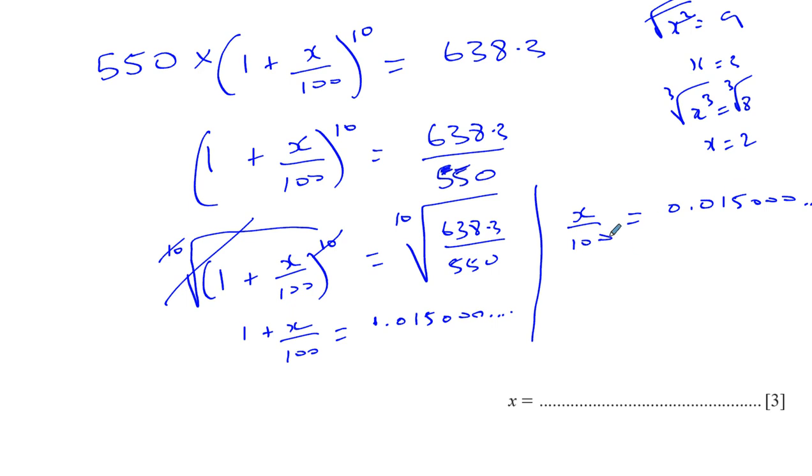And then, I've got to multiply both sides by 100. So, the decimal point moves two spaces, 1, 2. So, I'm left with 1.50 and a few zeros after that. So, I write my answer to three significant figures. X equals 1.50.